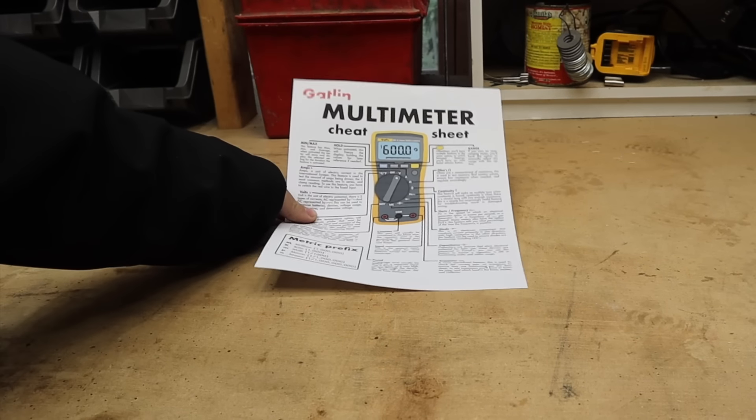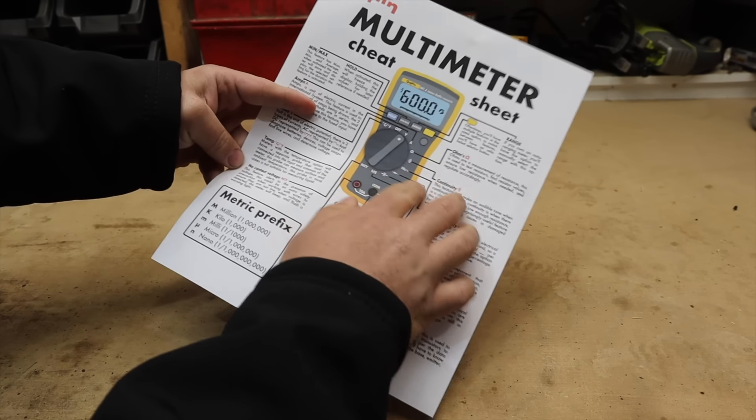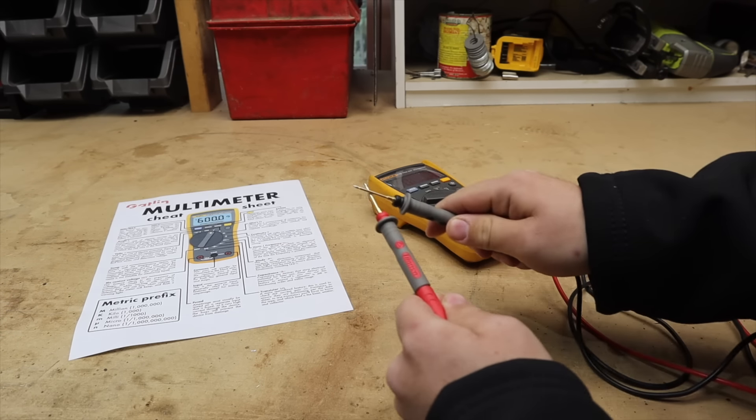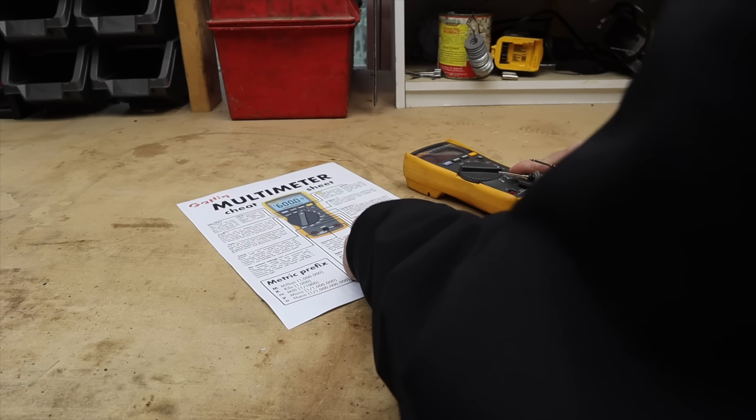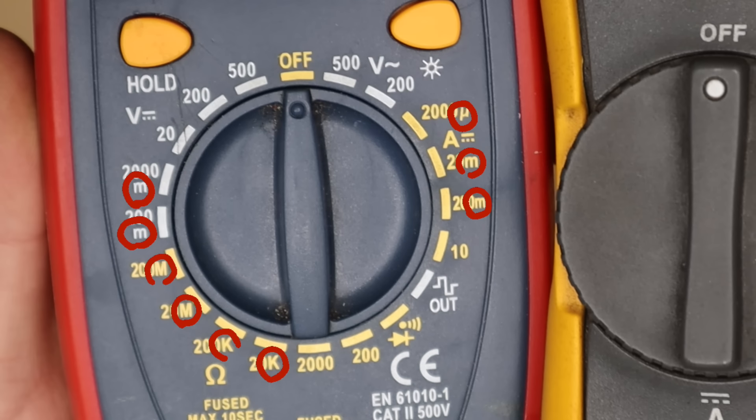We've created a multimeter cheat sheet which we're giving away for free. This cheat sheet has all the essential information on learning how to use your meter and it's a quick reference for the values and what each feature does. You can download this for free in the description below. So by understanding these measurement units we can now understand a lot more things on our meter.